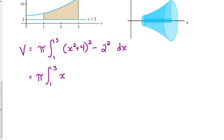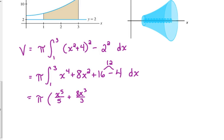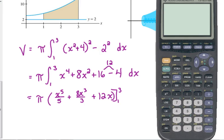Now let's foil that out. That's x to the 4th plus 8x squared plus 16 minus 2 squared is 4. And 16 minus 4 is 12. Integrate: x to the 4th is x to the 5th over 5 plus 8x cubed over 3 plus 12x, evaluated from 1 to 3. Typically these problems are calculator active because they're more testing do you understand the setup, not can you do all this output.